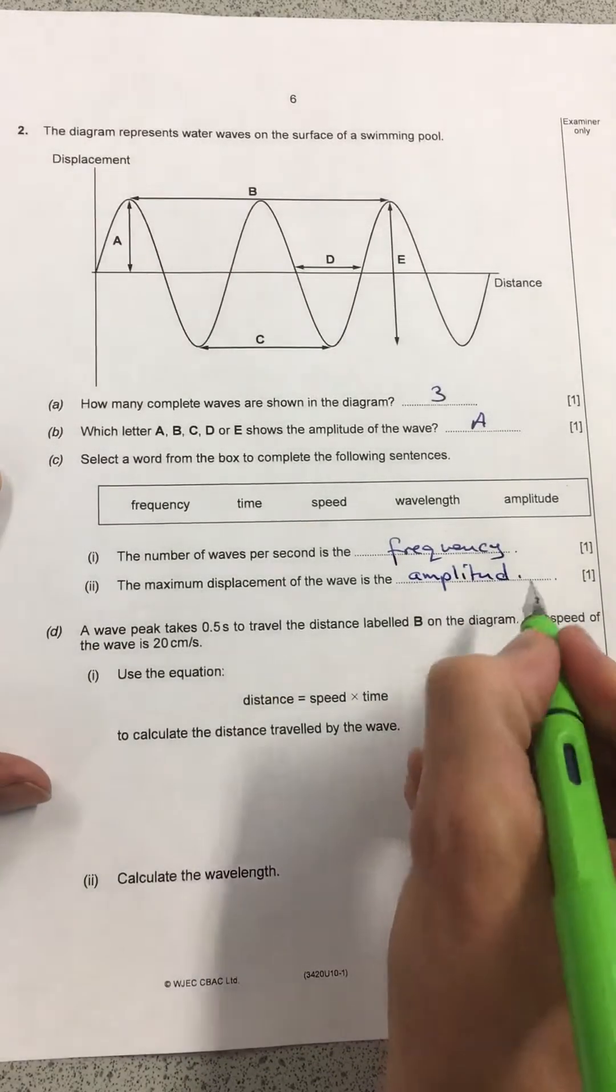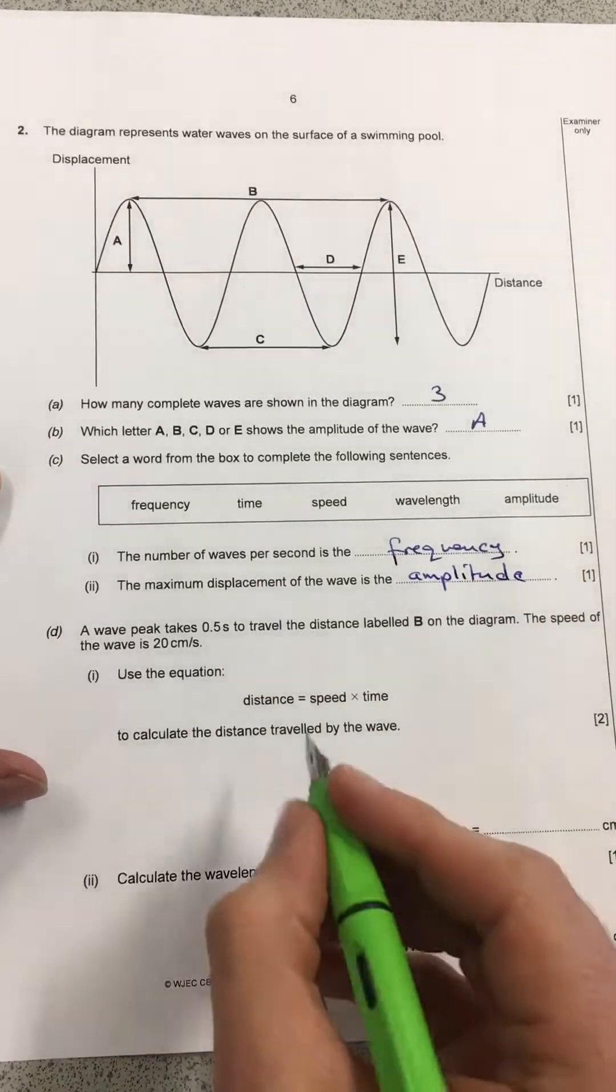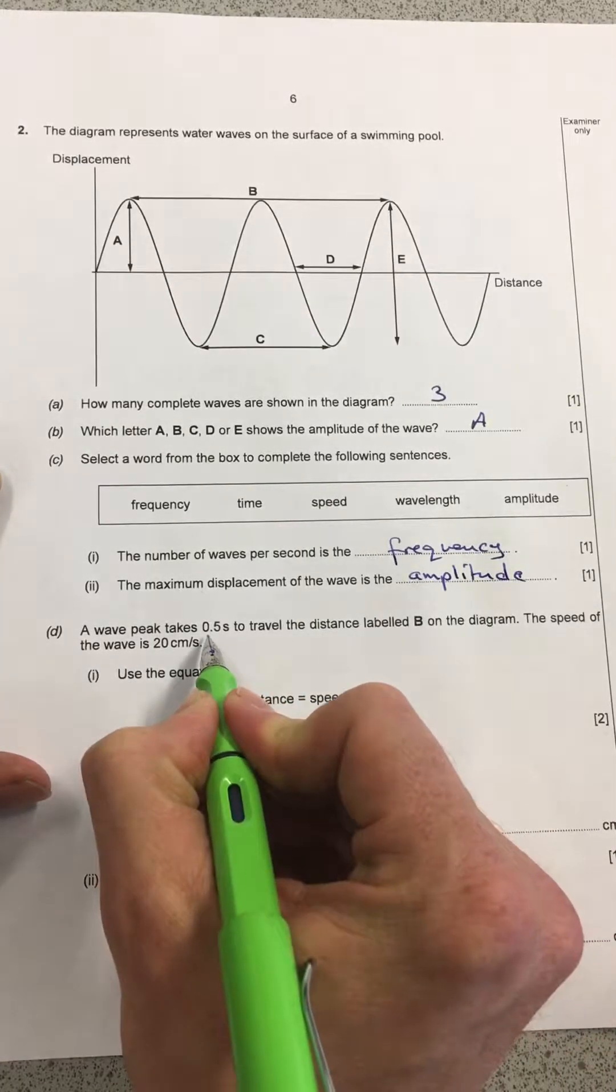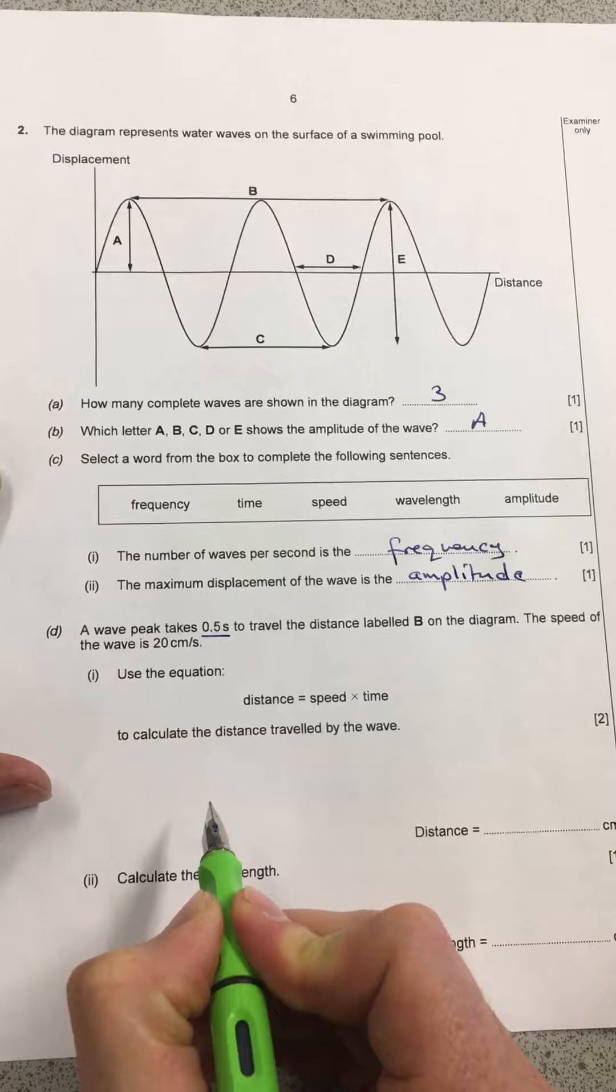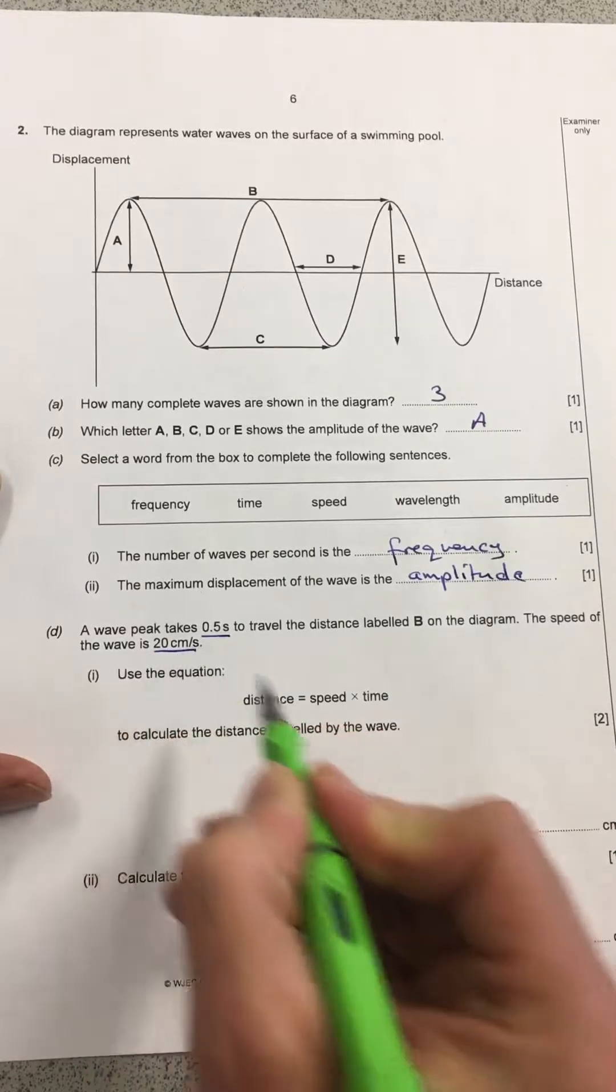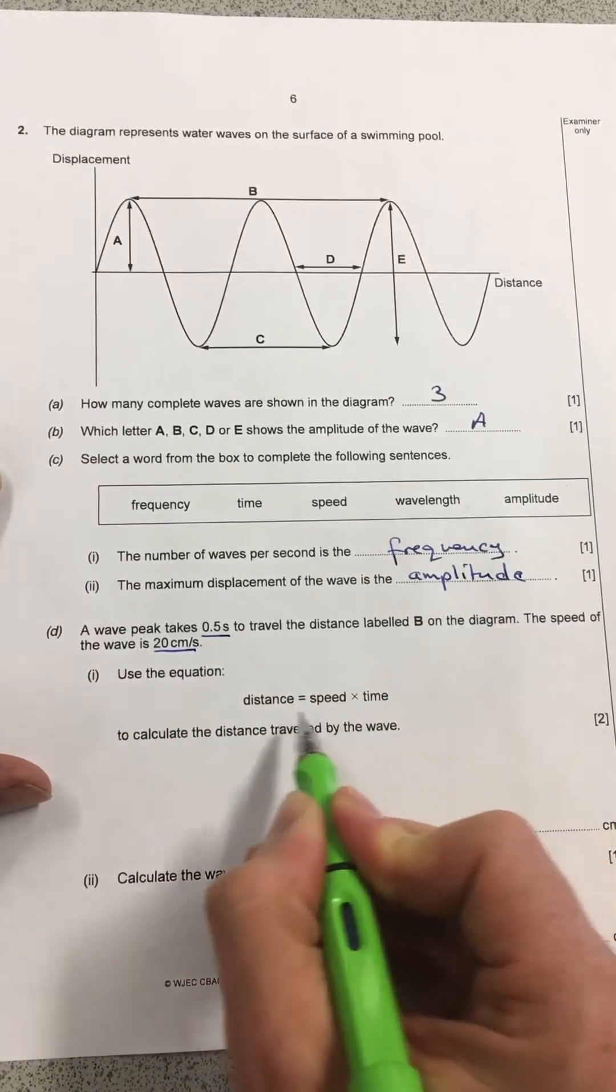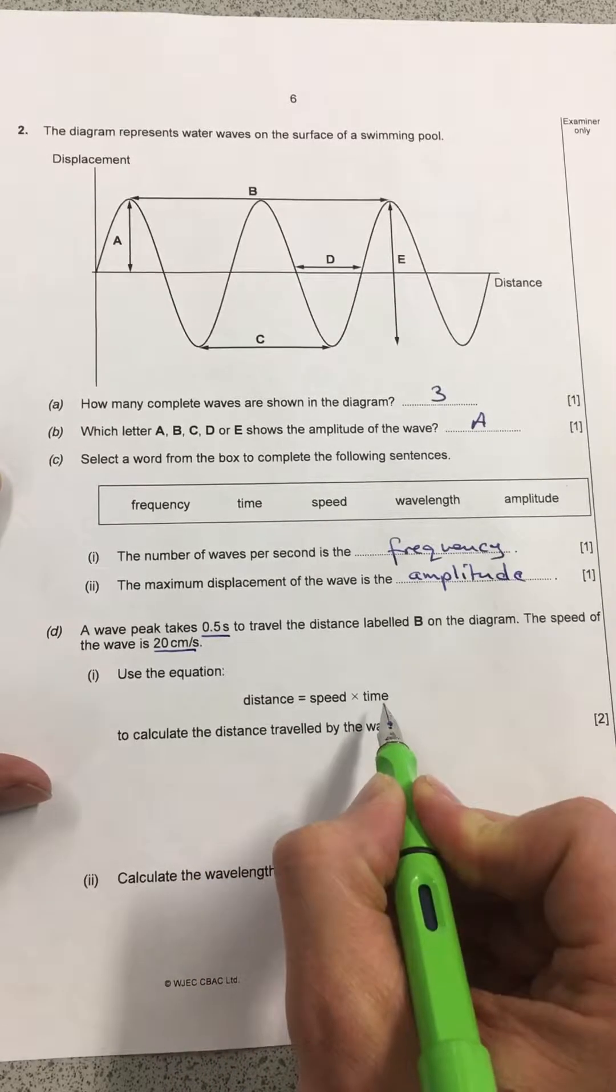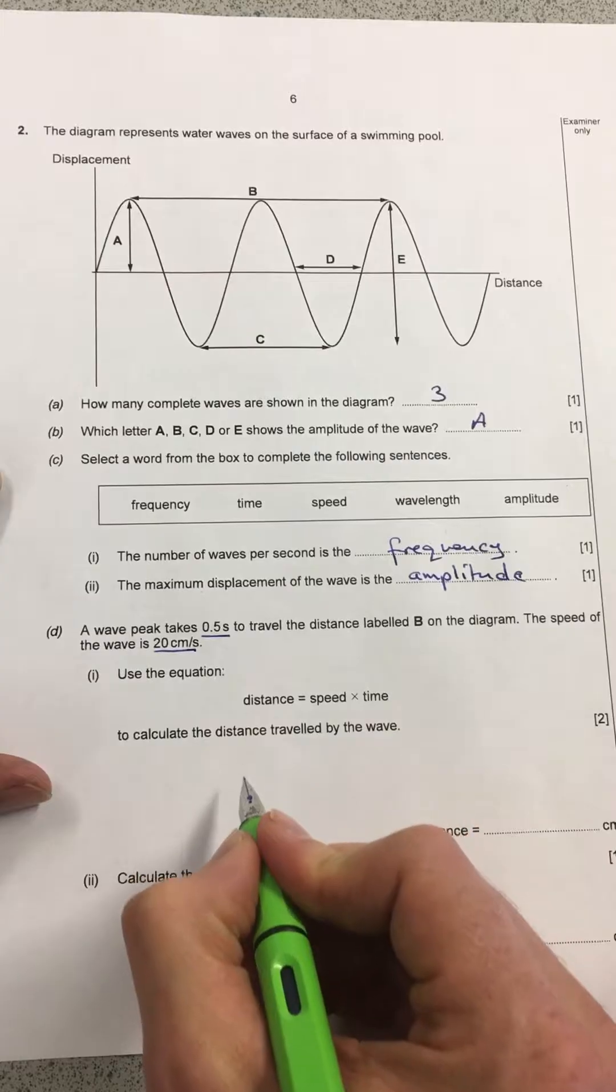Now the next bit is my favorite bit. We've got some maths. I love this stuff. So we need to take the information from the questions. We've got a time here and we've got a speed here. They've very helpfully told us that distance traveled is the speed times the time. So we just need to write those numbers in.